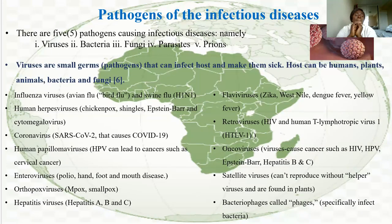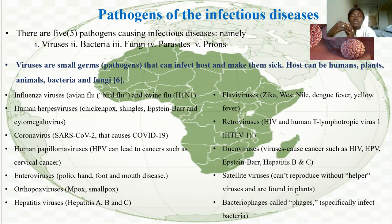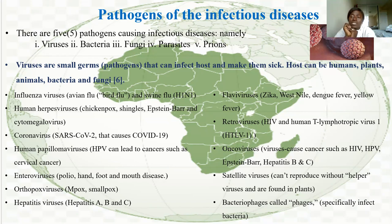There are different pathogens that cause these diseases — five types: viruses, bacteria, fungi, parasites, and prions. Viruses are very small germs that can affect hosts and make them sick. The hosts can be humans, plants, animals, bacteria, or fungi. Viruses need a host to survive and replicate.